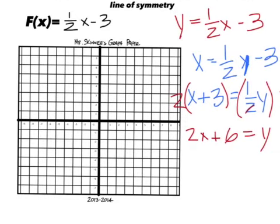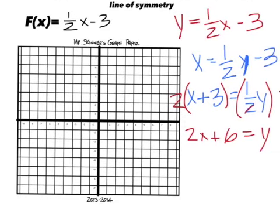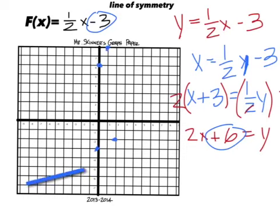We have to graph both functions. For the original function, go to negative three for the y-intercept, make a dot, and go up one over two for the slope. For the inverse function, go to six for the y-intercept, then go up two over one for the slope, and draw the line.